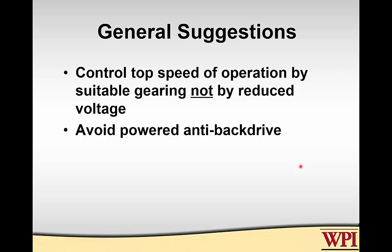Some general design suggestions: if you're controlling an arm, you want to control the top speed by gearing, not by reducing voltage. If you have a 12-volt battery, gear the motor so that at 12 volts it moves at the desired speed. At high speeds the motor runs much more efficiently, and you have more torque available if needed. Also, normally you want to avoid a powered back-drive. If you're picking something up, use a brake or locking mechanism rather than trying to provide just the right motor power to prevent back-driving.